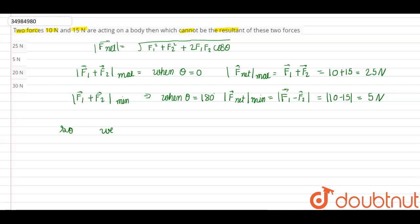So, all values of f_net lie between 5N and 25N. Therefore 35N cannot be the resultant — so 35 is the answer.